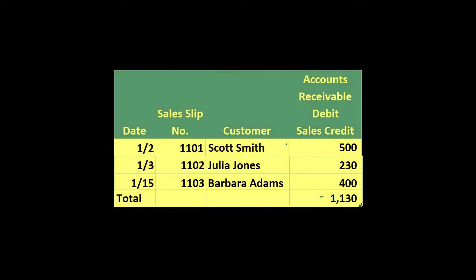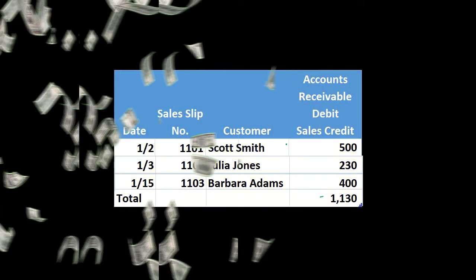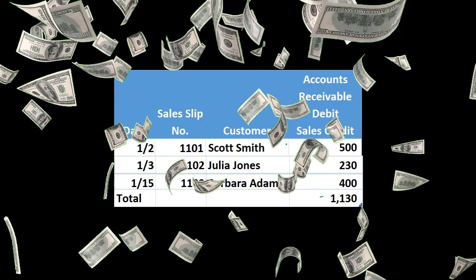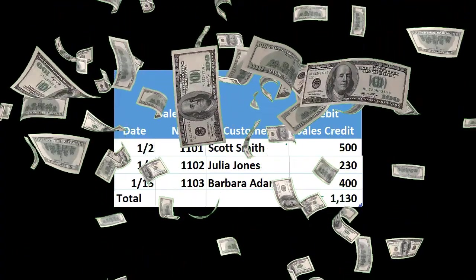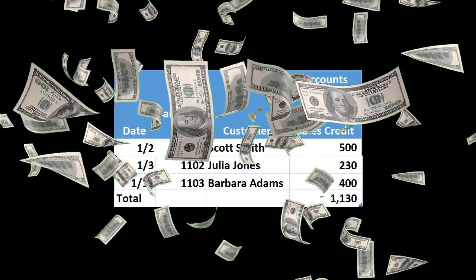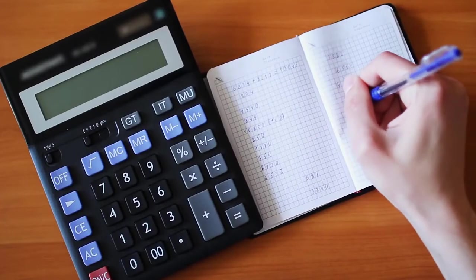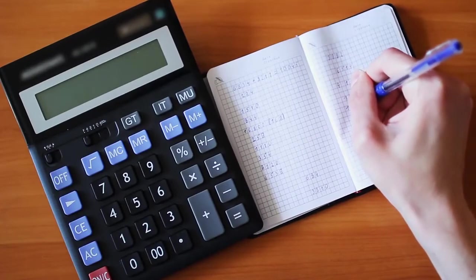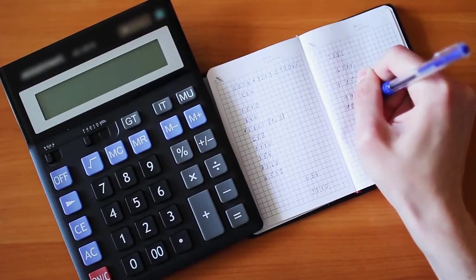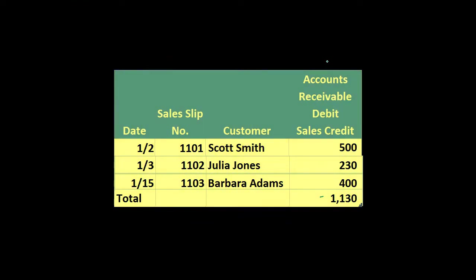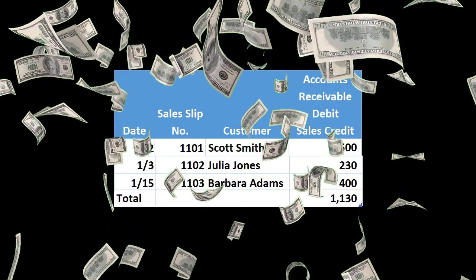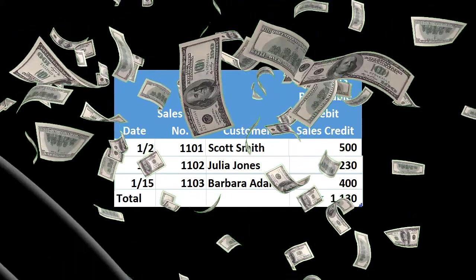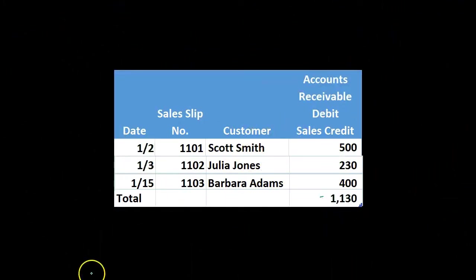It's important to note that even though this is called the sales journal, if we make a sale for cash, we will not record it on this journal — we'll record it on the cash receipts journal. This is really a shorthand name. It should really be called the sales on account journal or sales for accounts receivable journal, because if we make a sale for cash, that will typically not go in this journal; it'll go in the cash receipts journal.